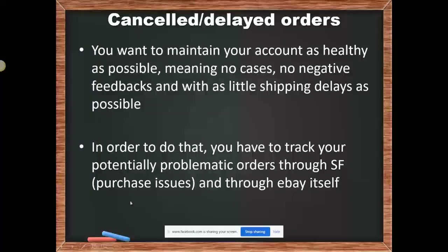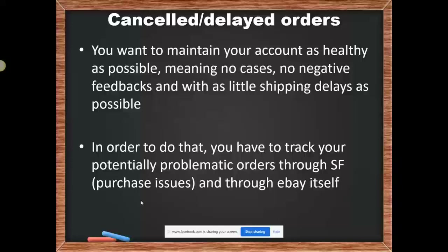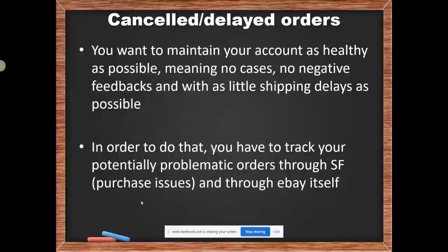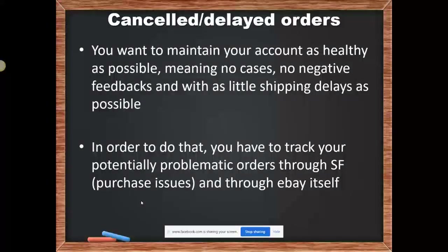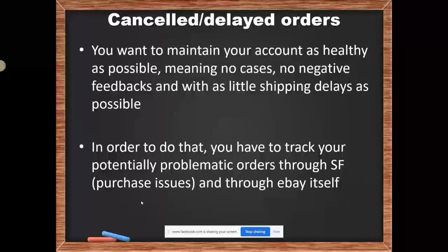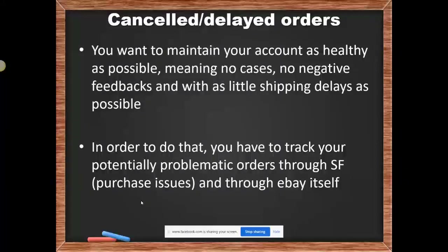If you see orders in the Purchase Issues — let's say you have 10 orders in Purchase Issues — those are 10 orders that weren't fulfilled automatically, and now those 10 orders are potentially a danger to your account. They could become overdue and cause angry buyers, negative feedbacks, and item-not-received cases — all things we don't want. So the sooner we take care of them, the sooner we prevent problems.